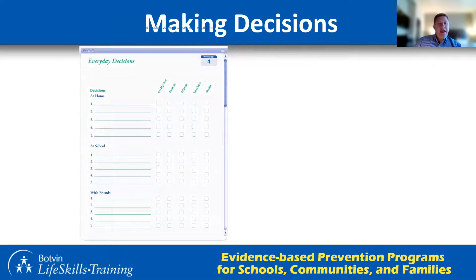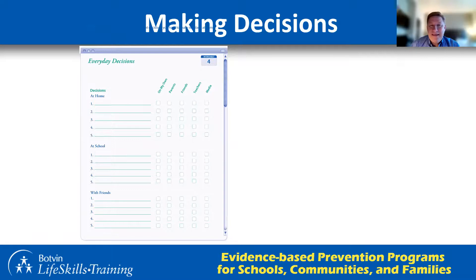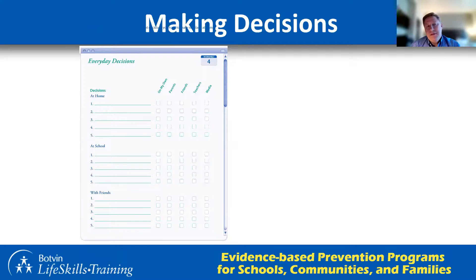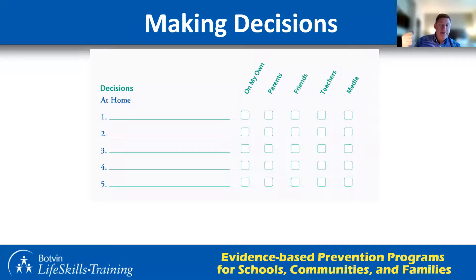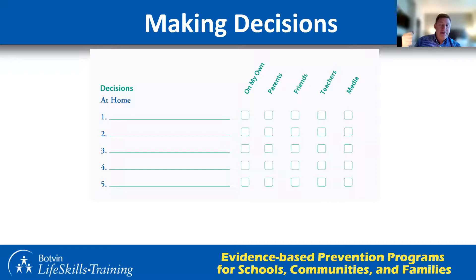Decisions at home, school, and with friends — those are three common areas that every child who's 11 to 13 years old is in. They're usually under someone's care at school or with friends. That would have applied when I was a student. We're only talking about identifying the influences — and this is just an example of one worksheet.